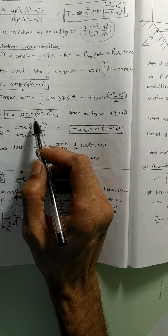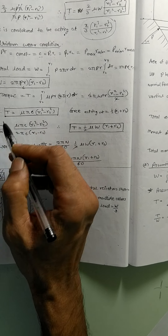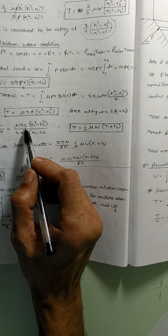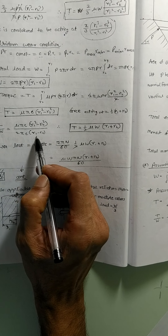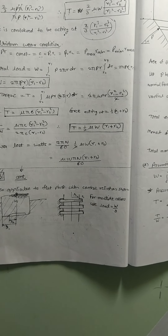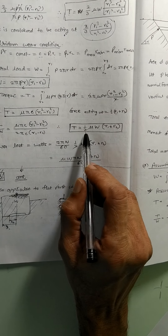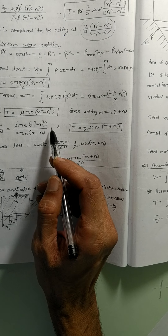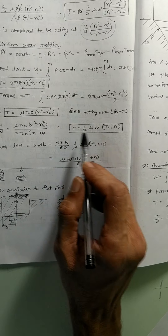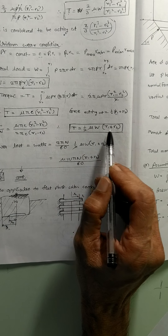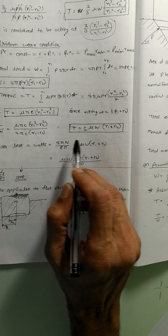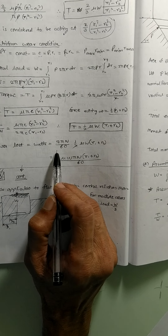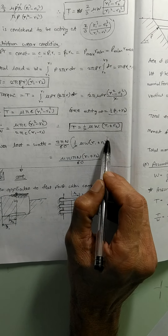For the torque under uniform wear, T equals integration of mu P R 2 pi R dr. The P times R combines to give C, leaving one R in the integration sign. So integration of R dr from R1 to R2 gives (R1 squared minus R2 squared) over 2. The 2s cancel and T equals mu pi C (R1 squared minus R2 squared). Dividing T by W: since R1 squared minus R2 squared equals (R1 plus R2)(R1 minus R2), the (R1 minus R2) cancels, giving T equals (1/2) mu W (R1 plus R2). So the effective radius is (1/2)(R1 plus R2).